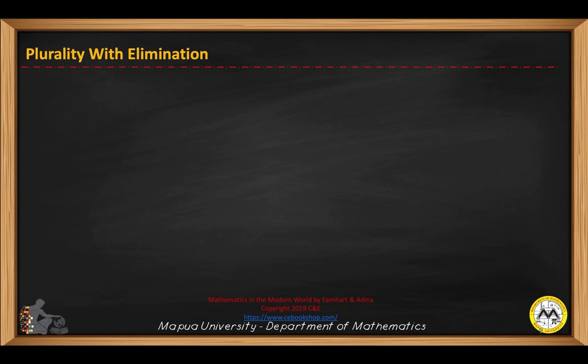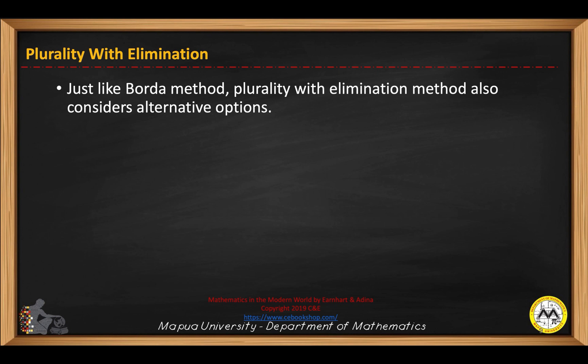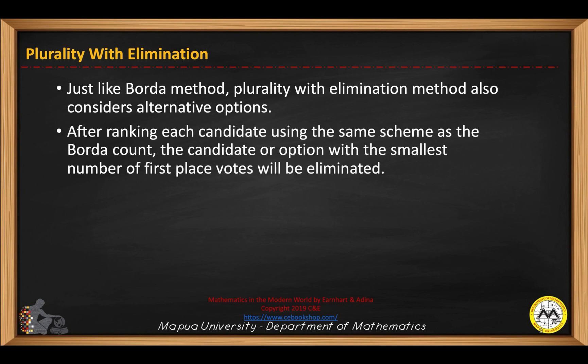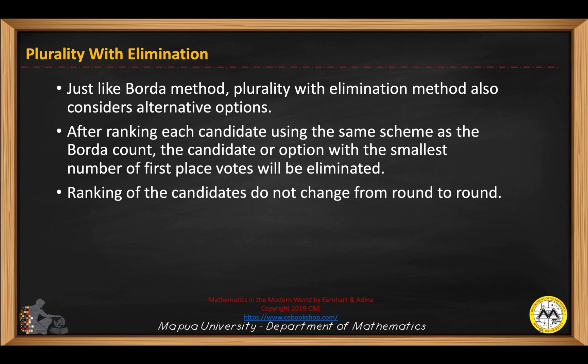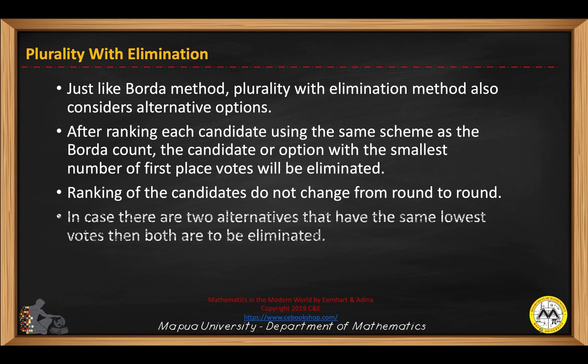Now let's have the plurality with elimination method. Just like the Borda method, the plurality with elimination method also considers alternative options. After ranking each candidate using the same scheme as that of the Borda count, the candidate or option with the smallest number of first-place votes will be eliminated. Rankings of the candidates do not change from round to round. In case there are two alternatives that have the same lowest votes, then both should be eliminated.